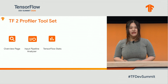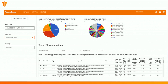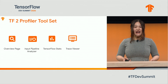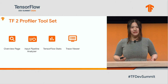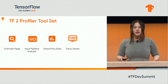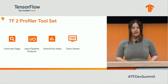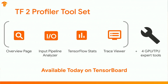The third tool released today is called TensorFlow Stats, which presents TensorFlow ops statistics in charts and tables. The fourth tool is called Trace Viewer, which displays a detailed event timeline for in-depth performance debugging. We also provide four tools that are TPU or GPU specific, all available today on TensorBoard.